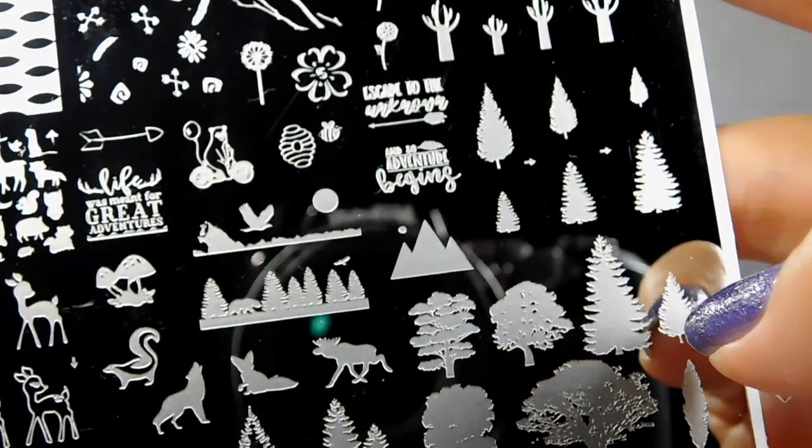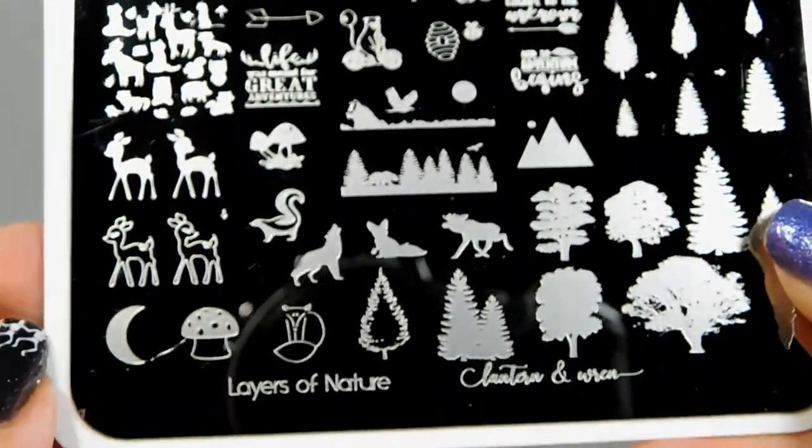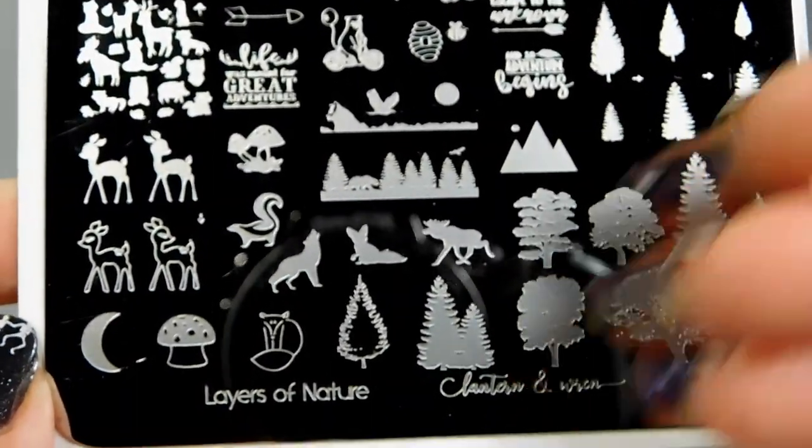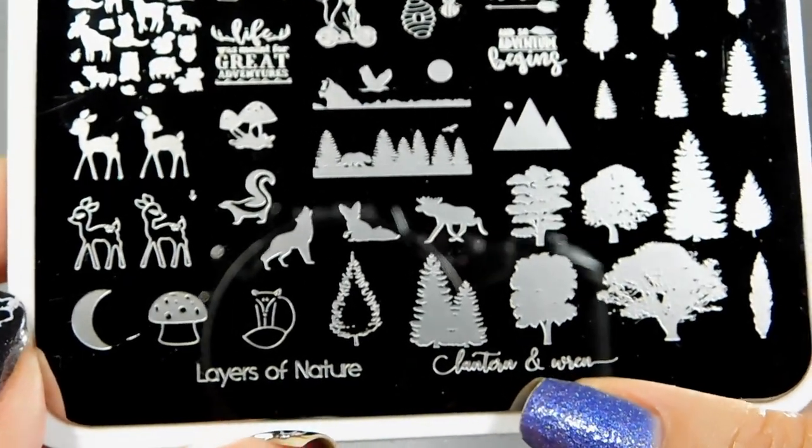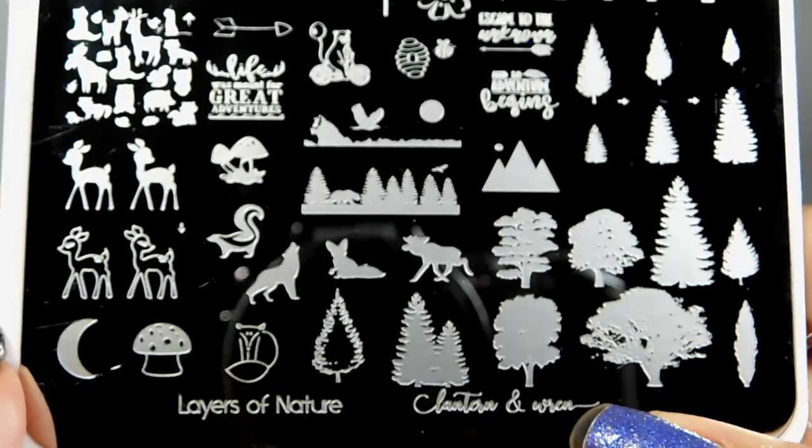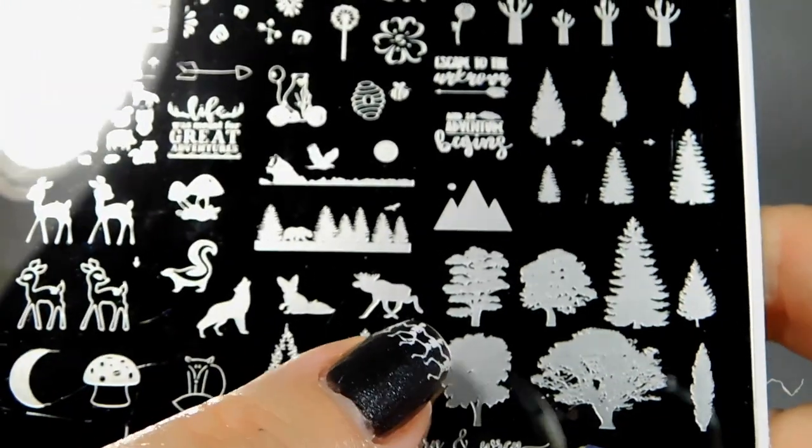Trees that you can layer together to make a multi-dimensional effect if you're using different colors to get them back across your nails. Or just all kinds of pretty different trees for fall. You can do them in white for winter, whatever season you want to do, depending on the colors that you're choosing.